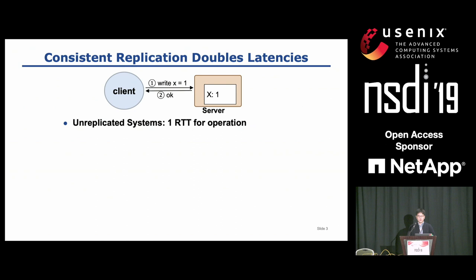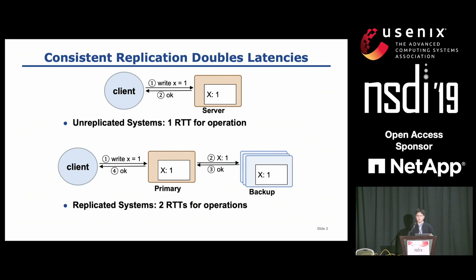However, with replication, a client first sends an RPC request to a primary node, and then the primary node must replicate the execution result to backups before returning to the client. Otherwise, a completed operation may get lost when the primary crashes.